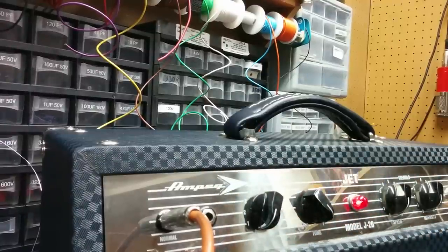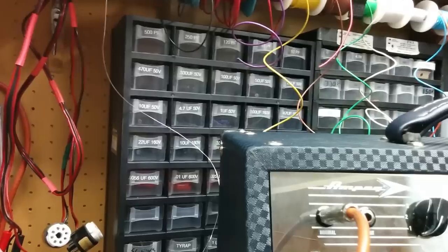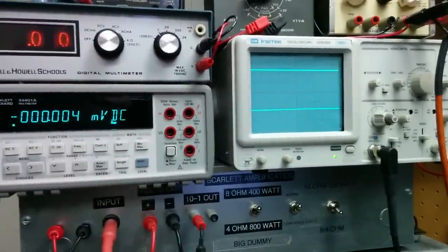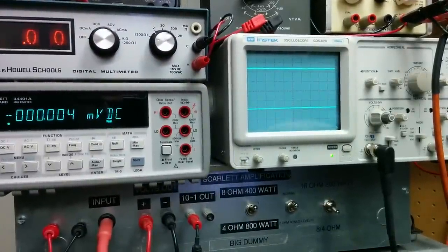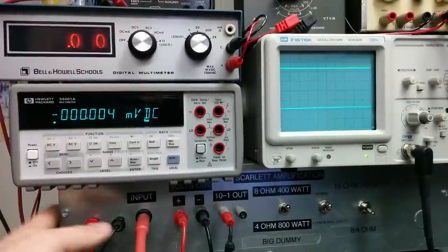We're plugged into the normal input and I'm just going to basically turn on my signal generator and turn it up and watch what happens on the oscilloscope. So I've got the amp and the speaker is disconnected from it and it's plugged into here, into my dummy load that I made.